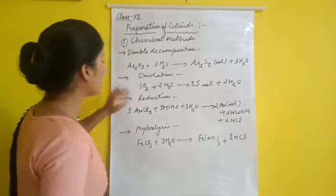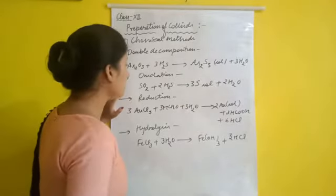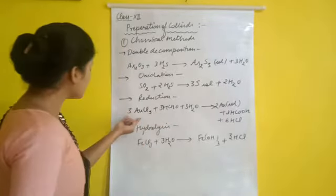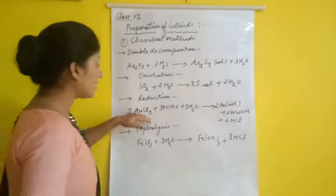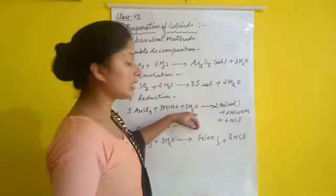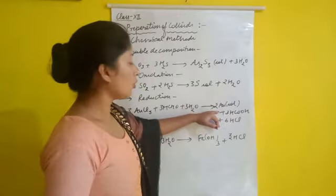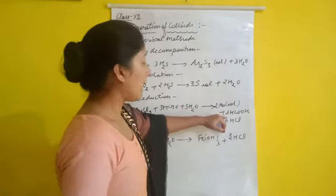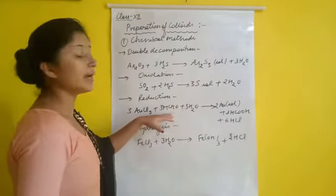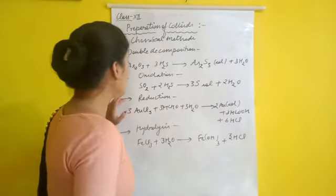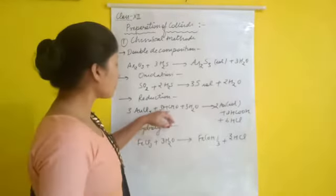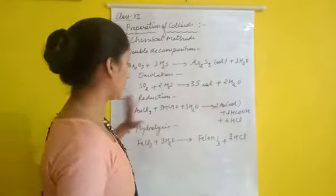The third chemical method is reduction. By the reduction method we can prepare a gold sol. Auric chloride reacts with formaldehyde and water molecules to give a gold sol, formic acid, and hydrochloric acid. So we can prepare a gold sol by the reduction of auric chloride in the presence of formaldehyde and water.